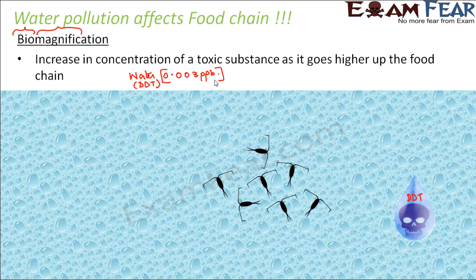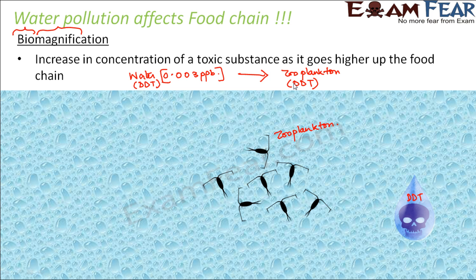Now, these small organisms called zooplanktons are found inside water. These organisms feed on this water, so they take in the polluted water. As a result, their body will also contain the toxin — and the toxin here is DDT. This water being consumed by the zooplankton means their body will also contain DDT. It has been seen that the concentration of DDT inside the zooplankton is 0.04 particles per billion. So the concentration has increased compared to the water's 0.003 particles per billion — the zooplankton have a higher concentration of DDT because they consumed the polluted water.